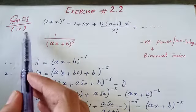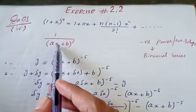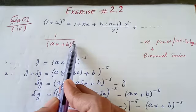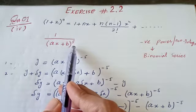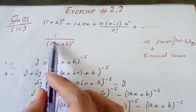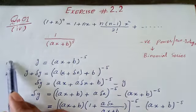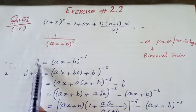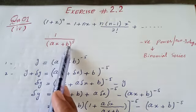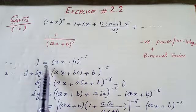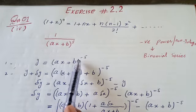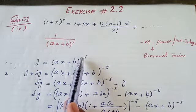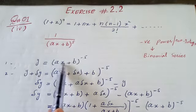Exercise 2.2, question 1, part 4: find the derivative of 1/(ax+b)^5. In the first step, we write the given function equal to y. So y = 1/(ax+b)^5, which can also be written as y = (ax+b)^(−5). This power of minus 5 applies to the complete term including the bracket.